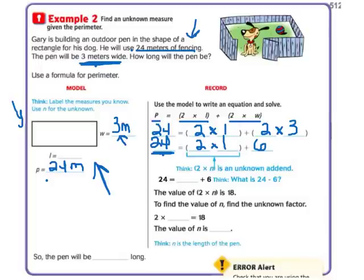So I'm going to think, what is 24 minus this 6 that I already know? 24 minus 6 is 18. So 2 times what gives me 18? 2 times 9 gives me 18. So the value of the length is 9.